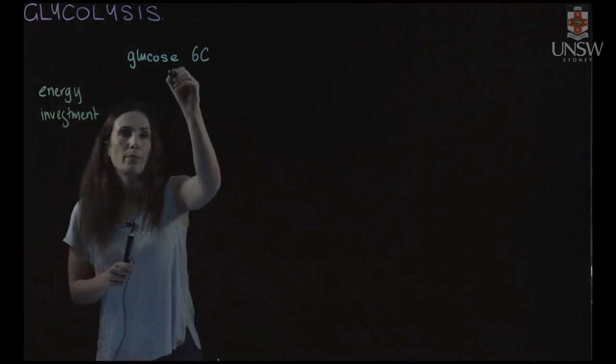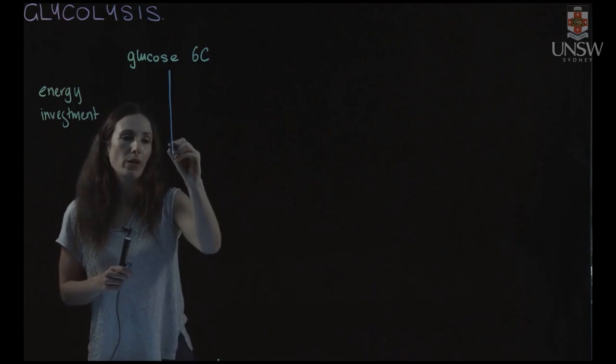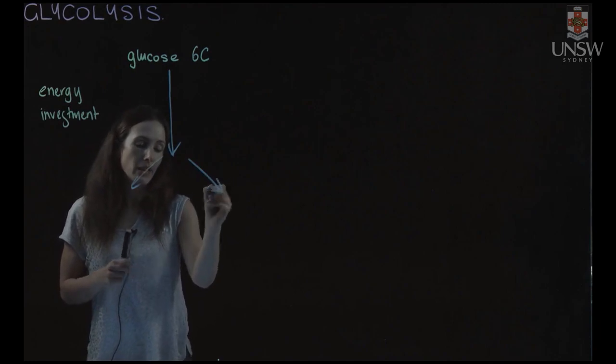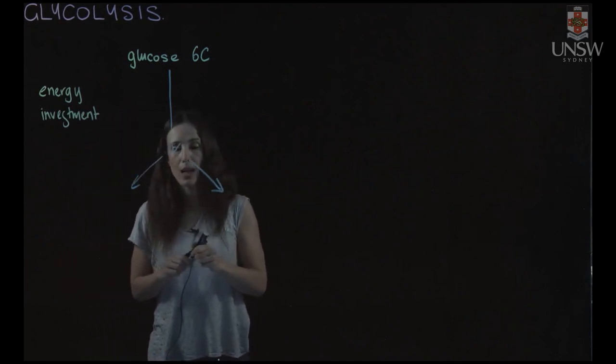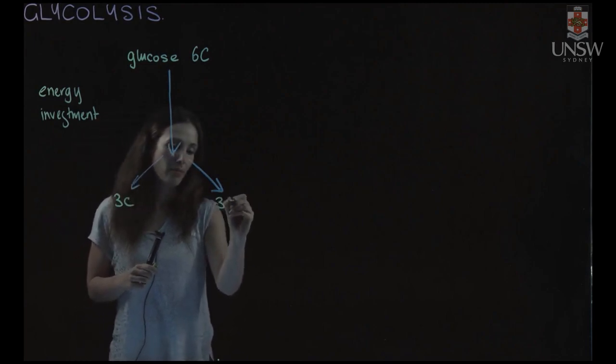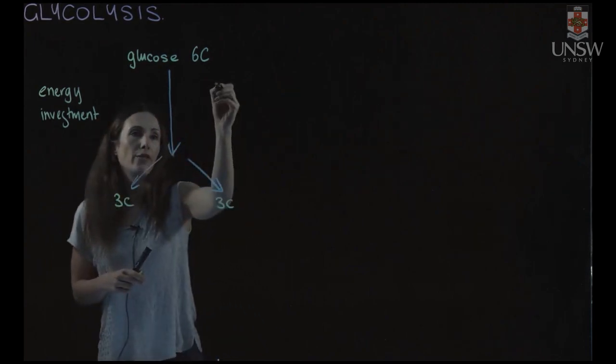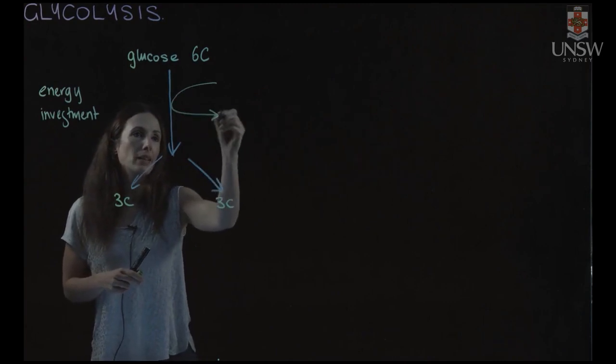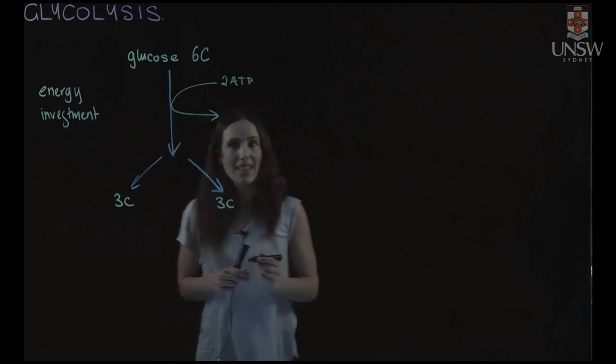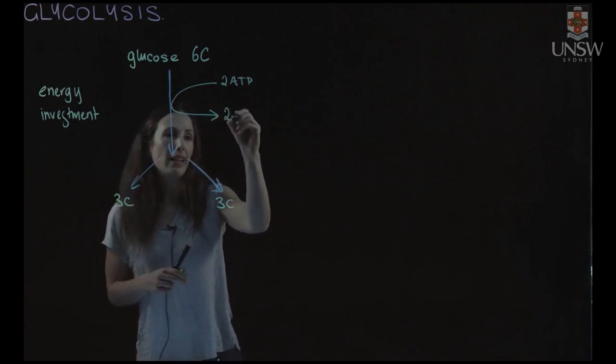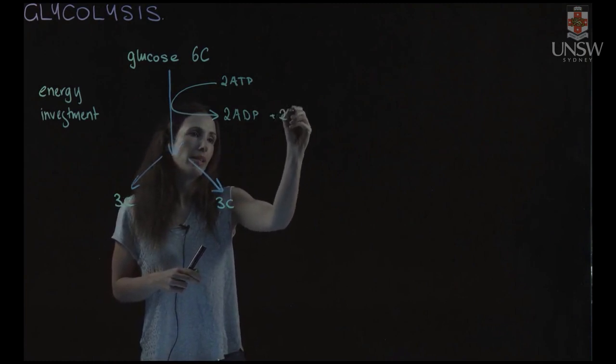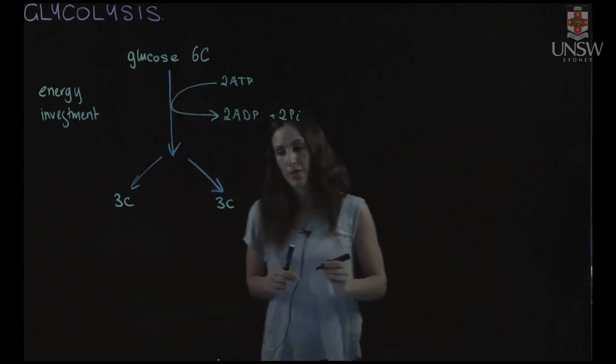So the first part of glycolysis we go from being six carbons. These are split into two three carbon molecules. And in that process we have two ATP that need to be put into the system and that gets hydrolyzed into two ADP plus our two inorganic phosphates.